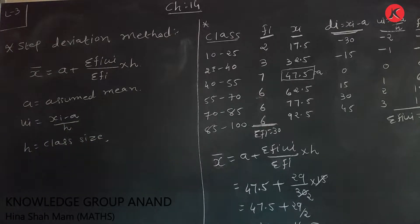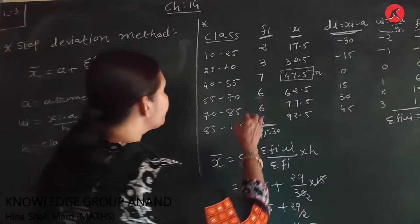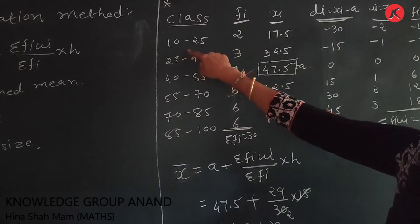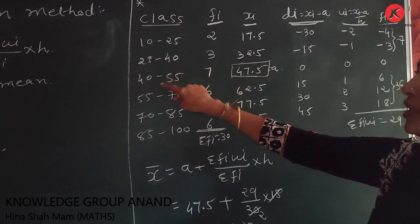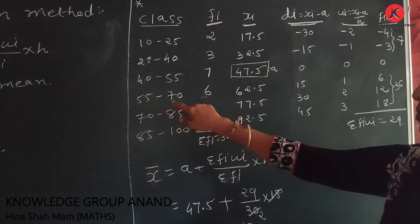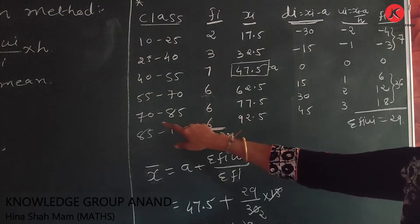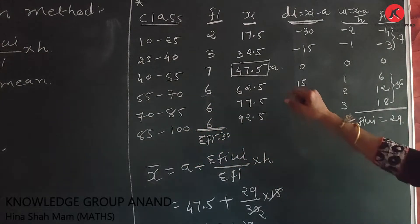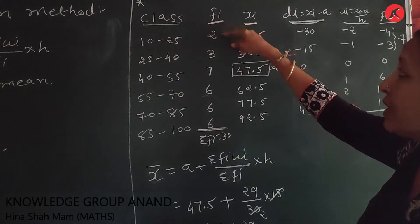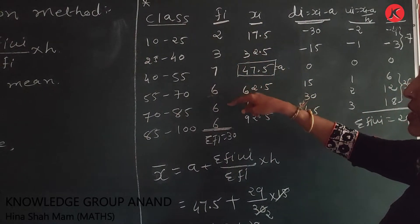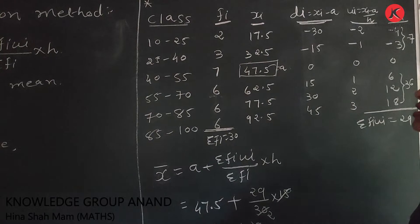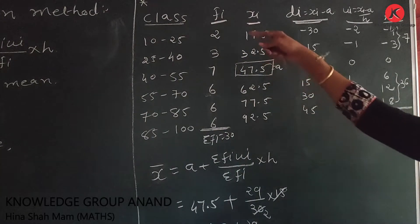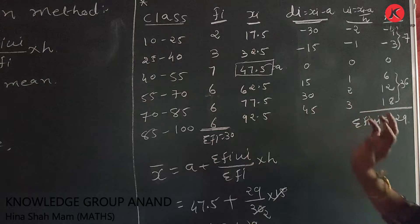Now we learn from an example. The class intervals given are 10-25, 25-40, 40-55, 55-70, 70-85, and 85-100. The frequencies given are 2, 3, 7, 6, 6, 6. Σfi, the sum of frequencies, is equal to 30.